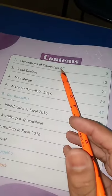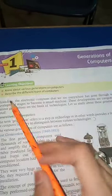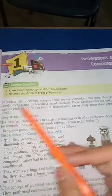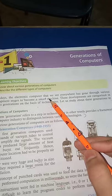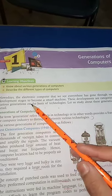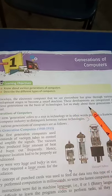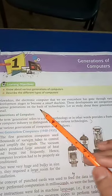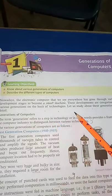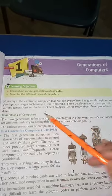The first chapter is Generation of Computers. Nowadays, the electronic computer that we see everywhere has gone through various development stages to become a smart machine. These developments are categorized in various generations on the basis of technology. Let us study about these generations in detail.